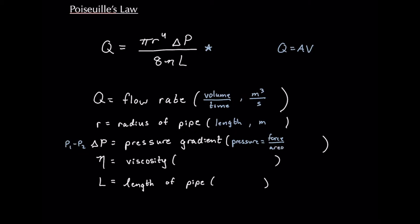So pressure gradient is going to be measured in units of force per area, so this can also be written of course as newtons over meters squared, which is equivalent to the Pascal unit. Now let's go to the denominator. 8 is simply a constant.